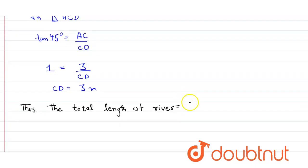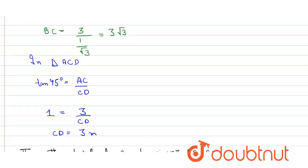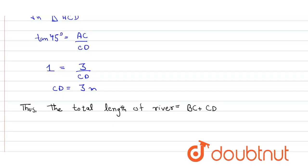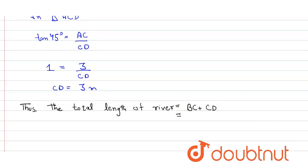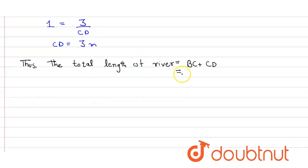BC plus CD, the value of BC is 3 root 3, so BC is 3 root 3 plus 3. We take common 3 under root 3 plus 1 in bracket meter, and that's our answer.